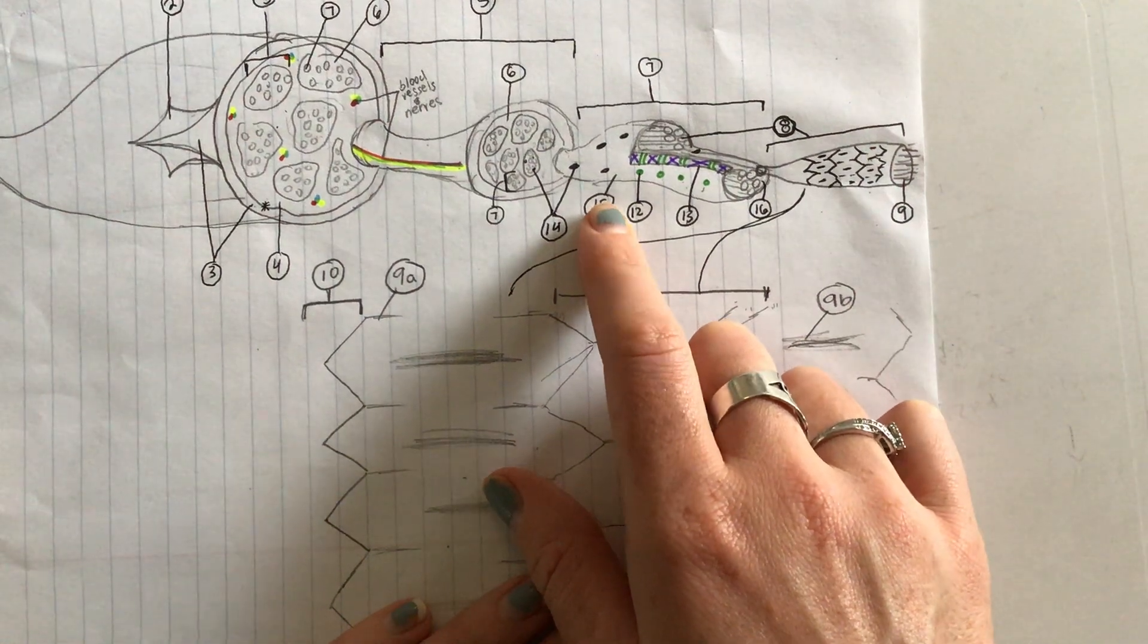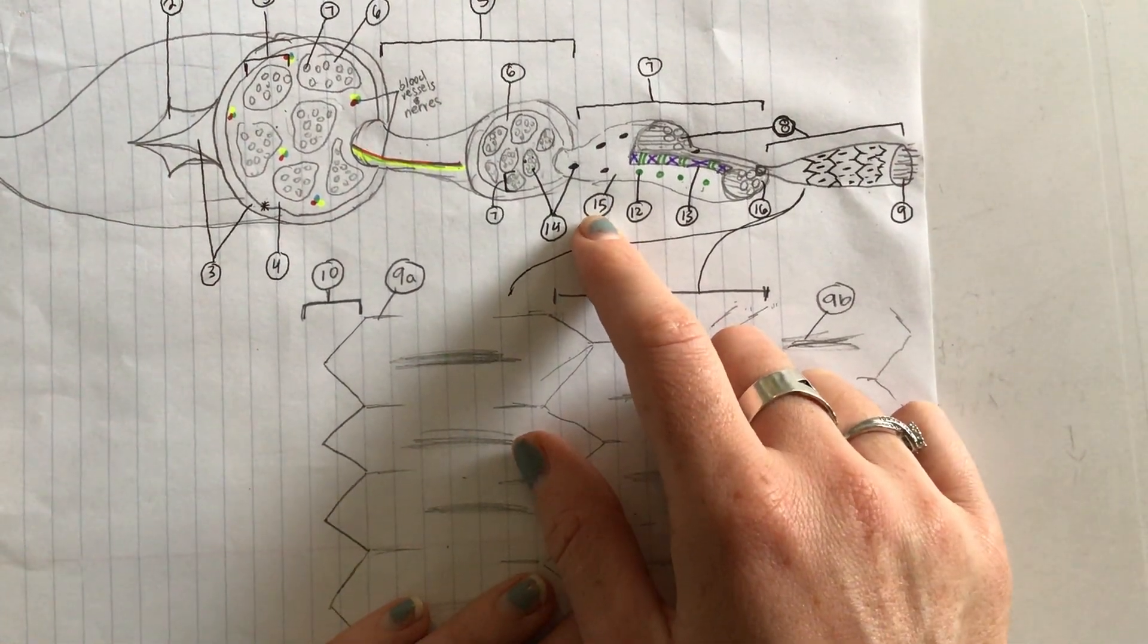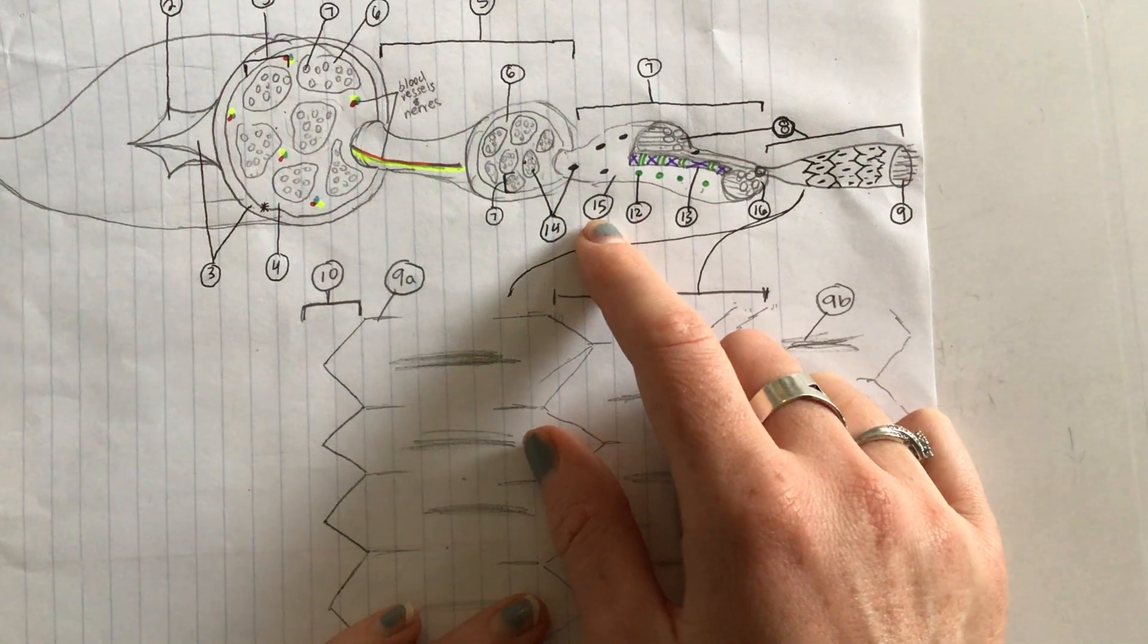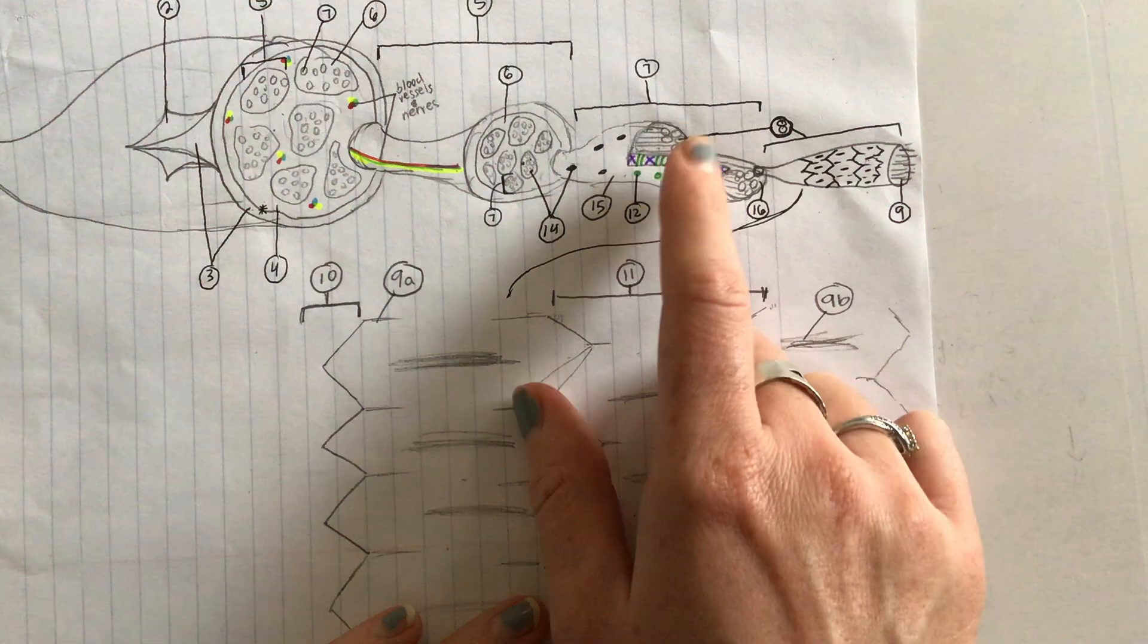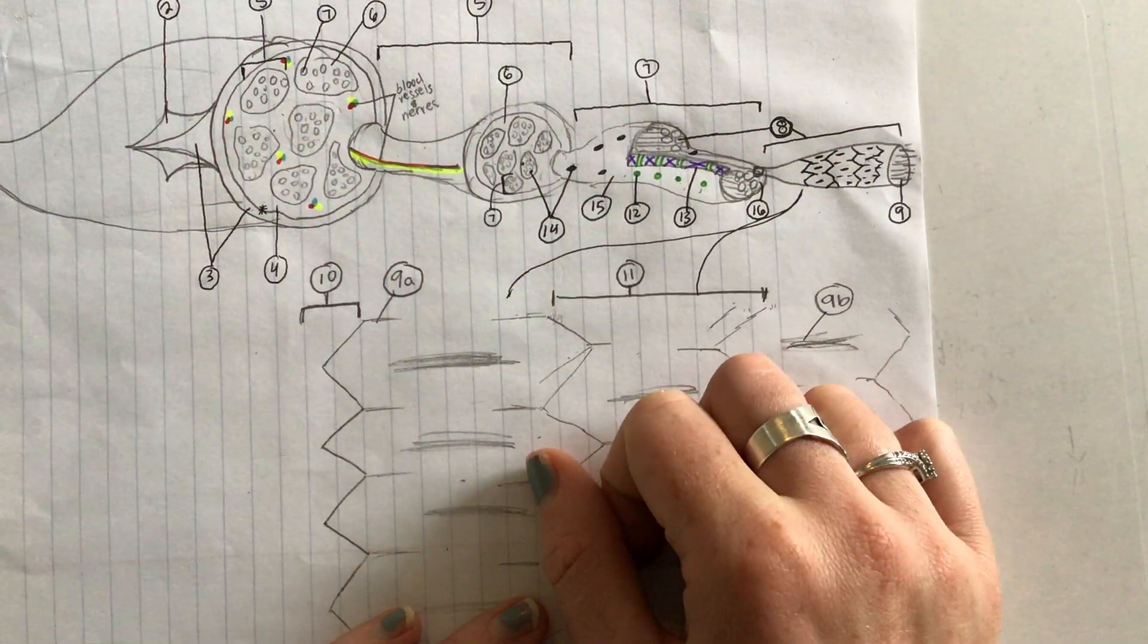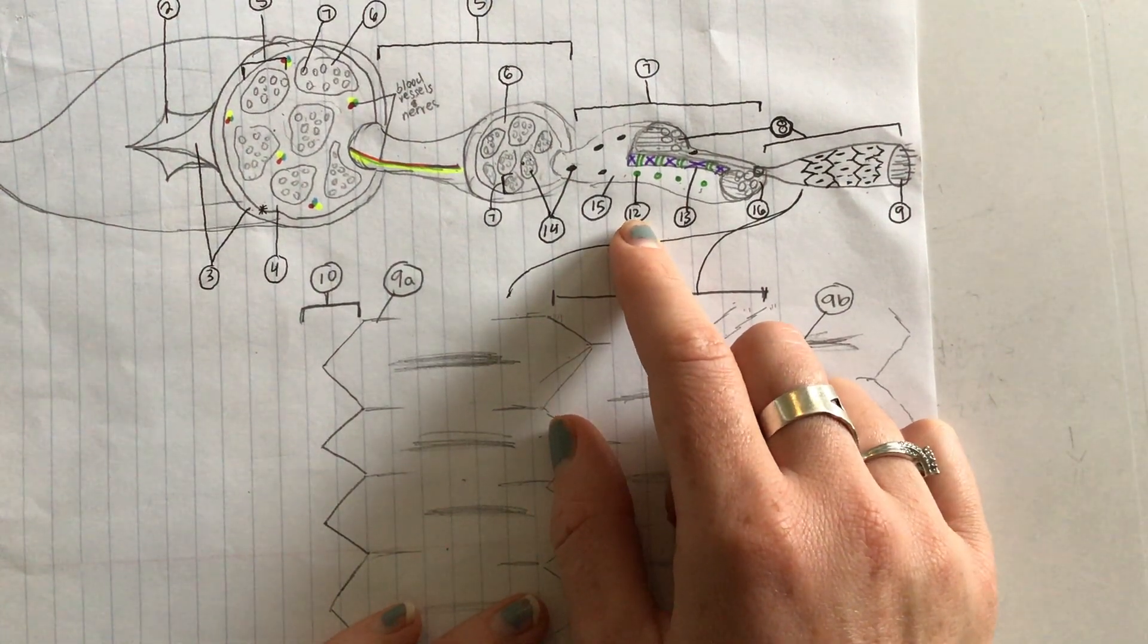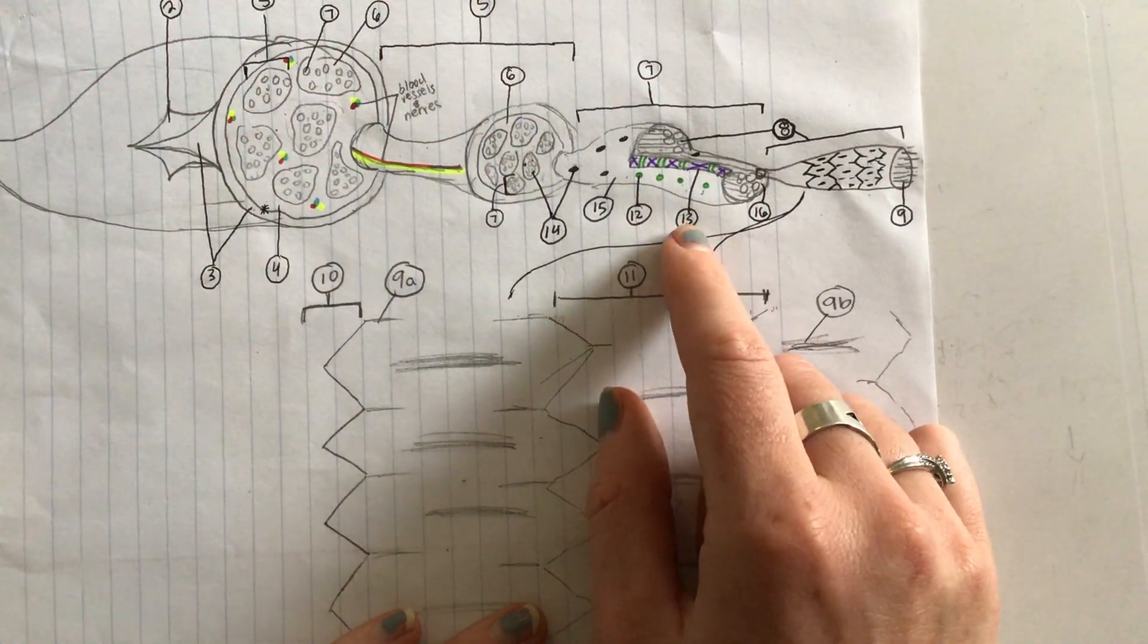Number 15 encases this entire muscle fiber, encases the muscle cell. Number 15 is the sarcolemma, the fancy name for cell membrane. Number 12 are these little holes that extend into tubes that allow materials to move inside and outside of muscle cells. What is number 12? These are t tubules.